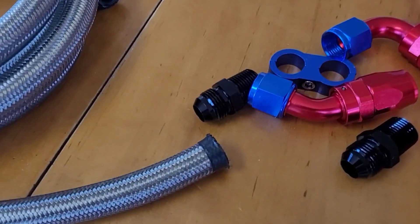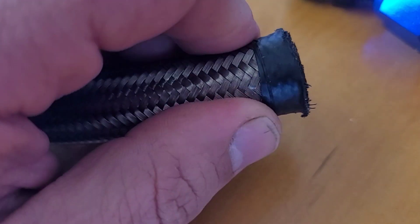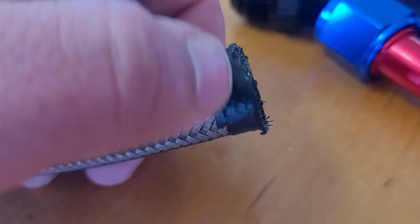We're going to be using some AN fittings because we're going to install some additions to our performance fuel system that we're working on, lift pump assembly. This is going to be a suction hose.